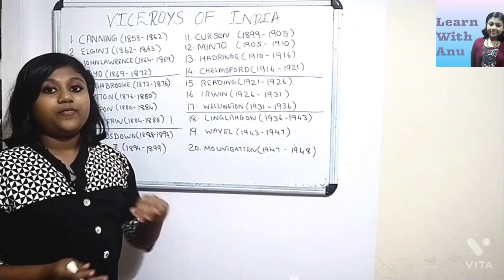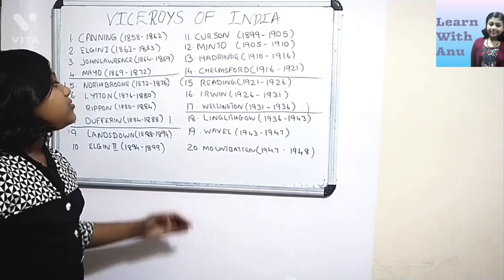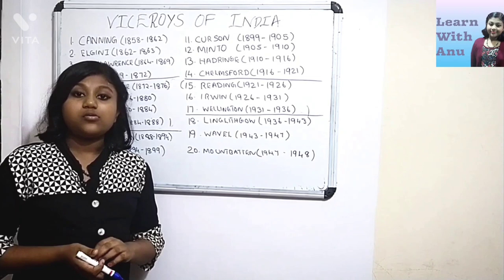And at last, from the fifteenth Viceroy to the seventeenth Viceroy, we have one more clue: a constant five-year period. Reading, Irwin, and Wellington each had a five-year period, constant difference. So this was the clue.